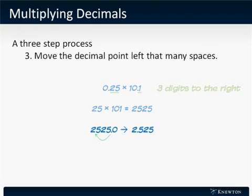Finally, we're going to move our decimal place back three spaces as seen in the slide because three was our total as we counted above. This changes our number 2,525 to 2.525.